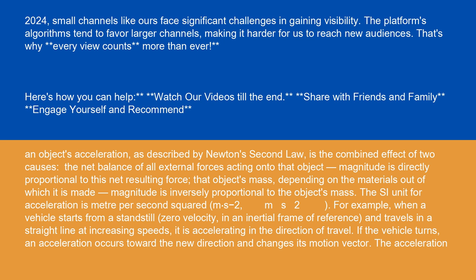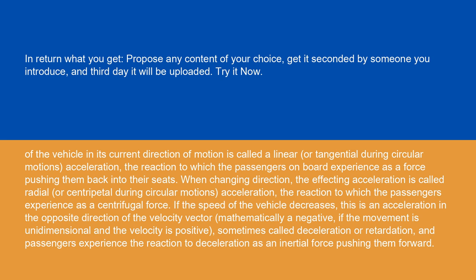The SI unit for acceleration is meter per second squared (m/s²). For example, when a vehicle starts from a standstill — zero velocity — in an inertial frame of reference, and travels in a straight line at increasing speeds, it is accelerating in the direction of travel. If the vehicle turns, an acceleration occurs toward the new direction and changes its motion vector. The acceleration of the vehicle in its current direction of motion is called linear or tangential during circular motions.